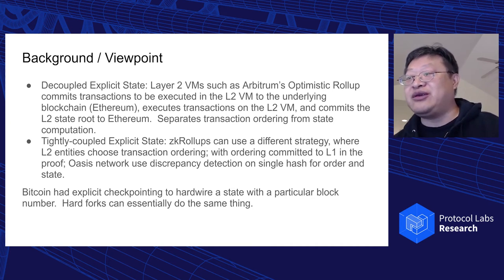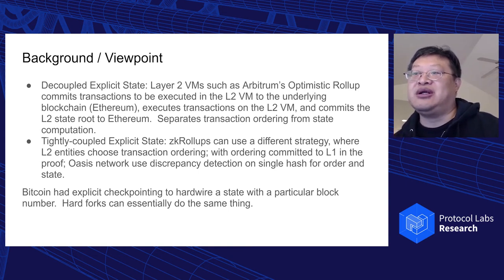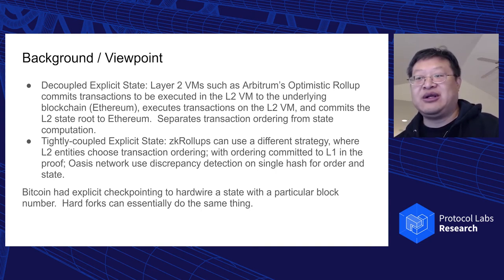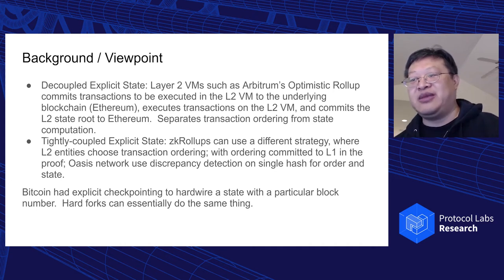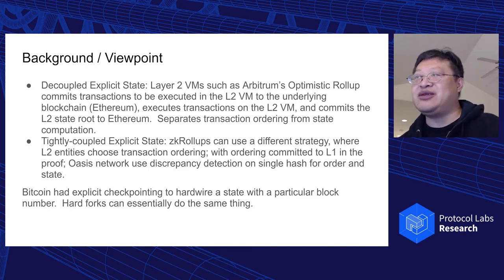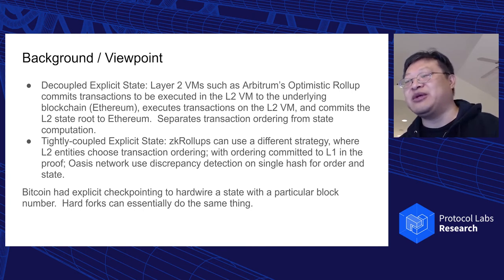Layer 2 virtual machines have some differences. Arbitrum's optimistic rollup does decoupled explicit state: transactions are logged on the underlying Ethereum blockchain before they're executed, then the virtual machines compute the resultant state. The bridge contract — the verifying bridge contract — says yay or nay. There are disputation periods and all that, and eventually it says it's accepted, and that is when the state is decided. That's decoupled because it happens later.